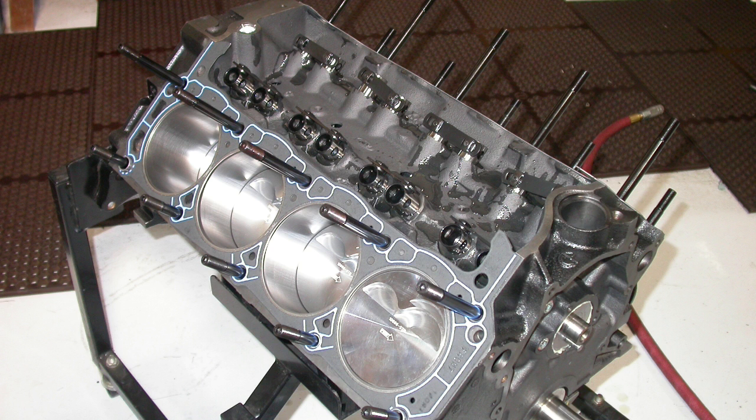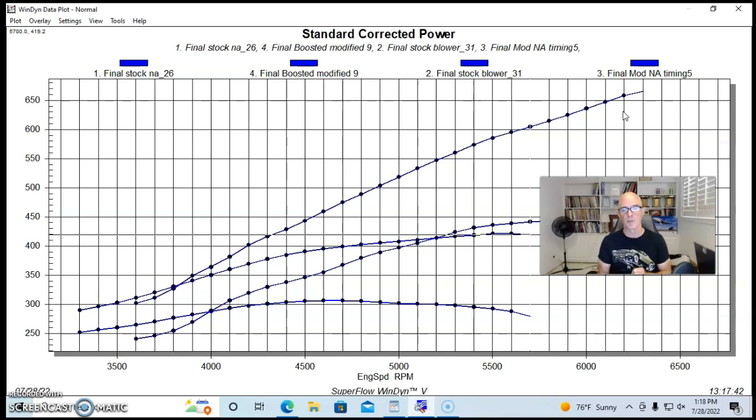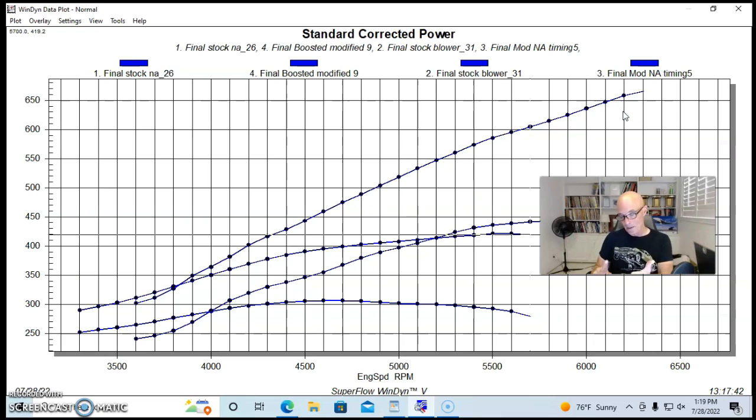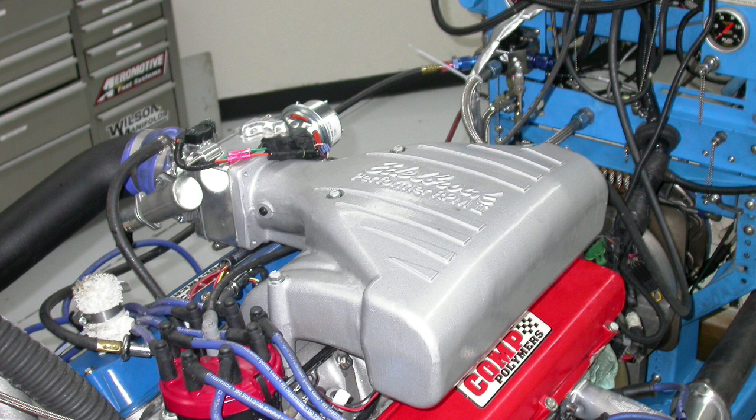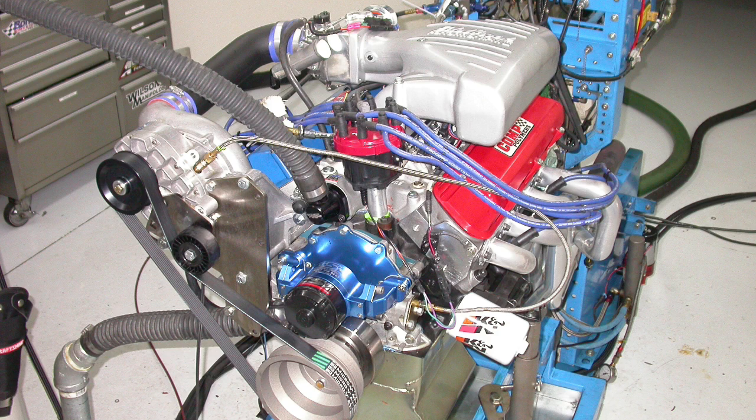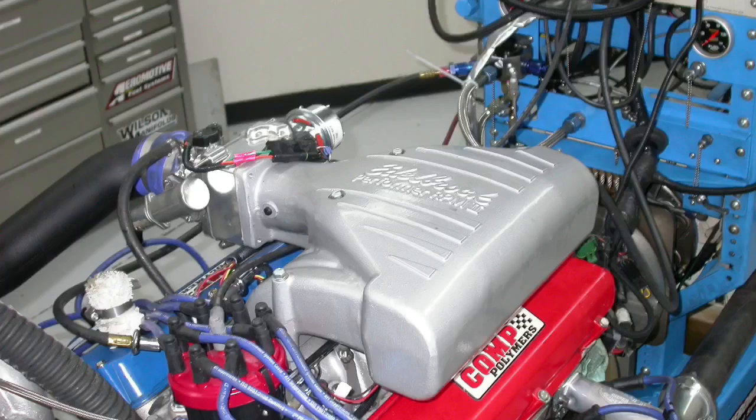Running stock heads, cam, and intake is restrictive on a 302, but it's even more restrictive on a 347. We can add boost to that and boost obviously is a good thing, it always makes more power. But if we add heads, cam, and intake manifold to our NA combination and make it more powerful NA, especially if we make it more powerful than it was with boost on the stock stuff, really good things are going to happen when we add boost to that combo.